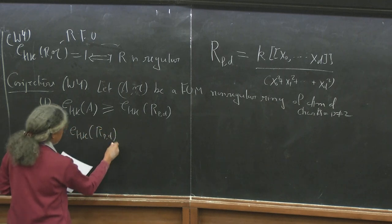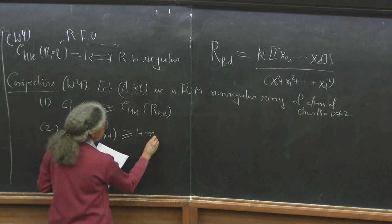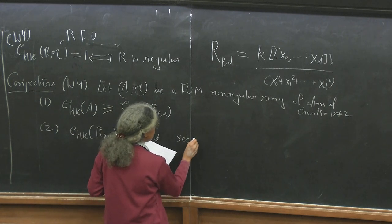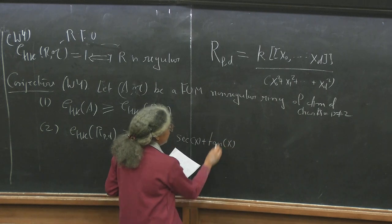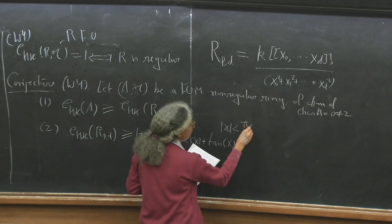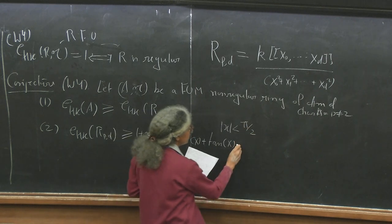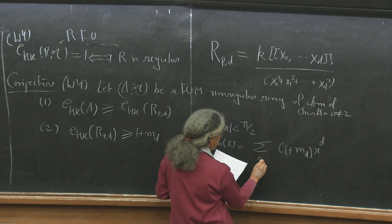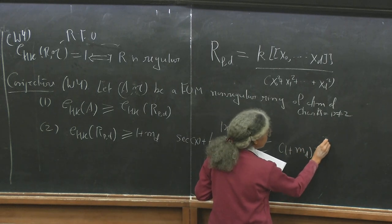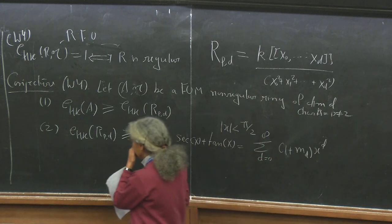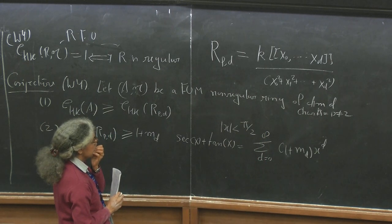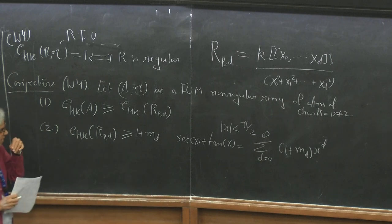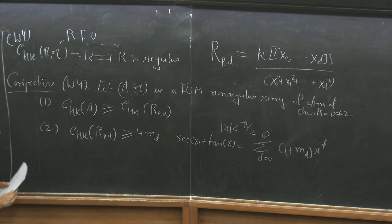The second part of the conjecture says EHK of R_P^D is greater than or equal to 1 + M_D, where M_D comes from: if I take sec(x) + tan(x) with |x| < π/2, it is a convergent power series written as 1 + M_D x^D, summing from d = 0 to infinity. This conjecture is by Monsky.